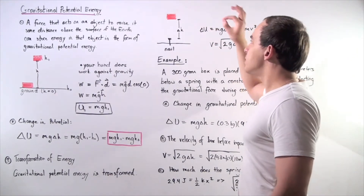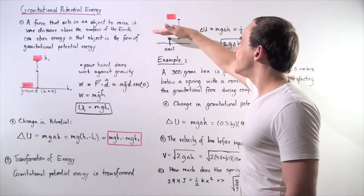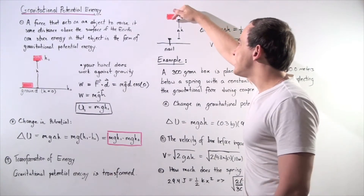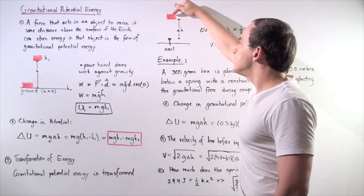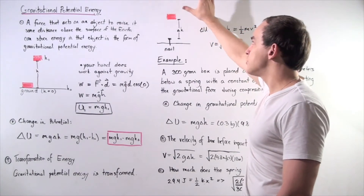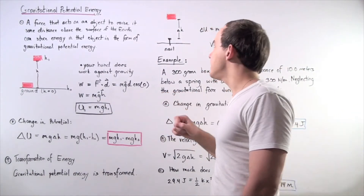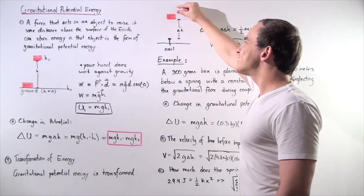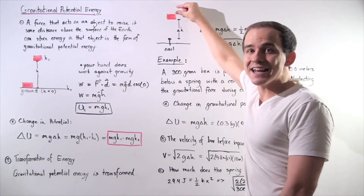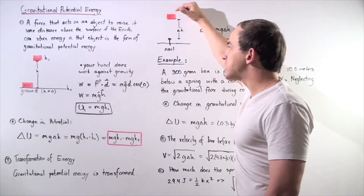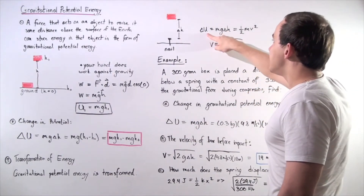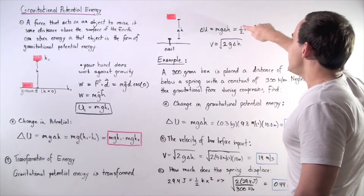Let's look at a common example. Suppose we have a box some distance h above a nail. If we let go of the box, it begins to accelerate as it travels downward. Because the distance decreases, the gravitational potential energy of the object begins to decrease — it's being transformed into kinetic energy, the energy of motion, as the object gains velocity. So the change in gravitational potential energy mg·Δh equals one-half mv squared.